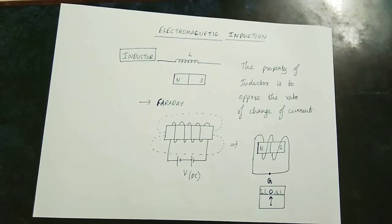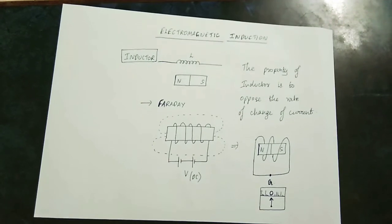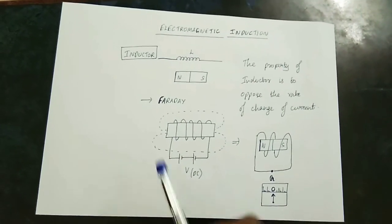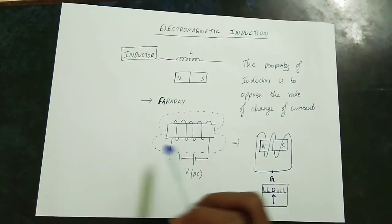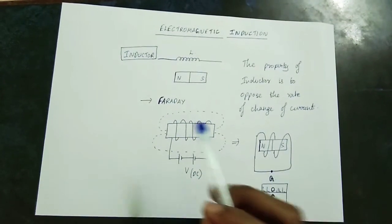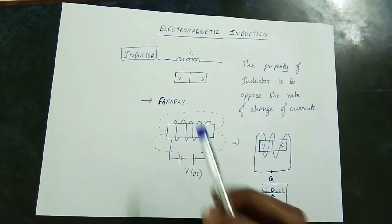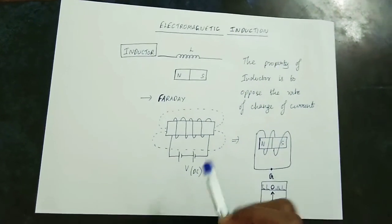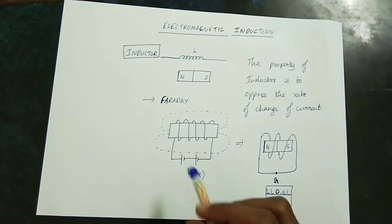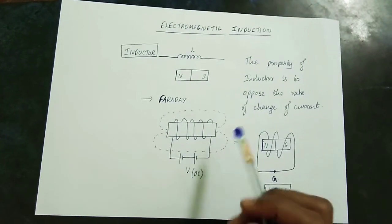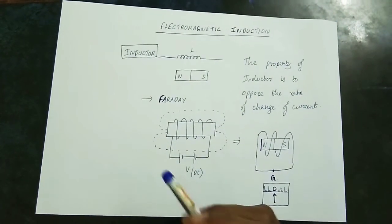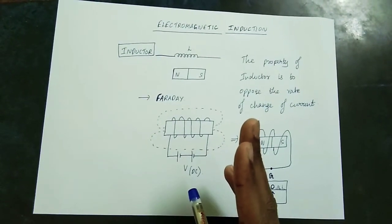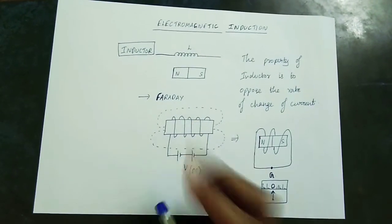If you look at the video, normally you take a conductor. A conductor is a coil of wire — the wire is a conductor. When you take a DC supply, it will create a magnetic field. The principle is Michael Faraday.